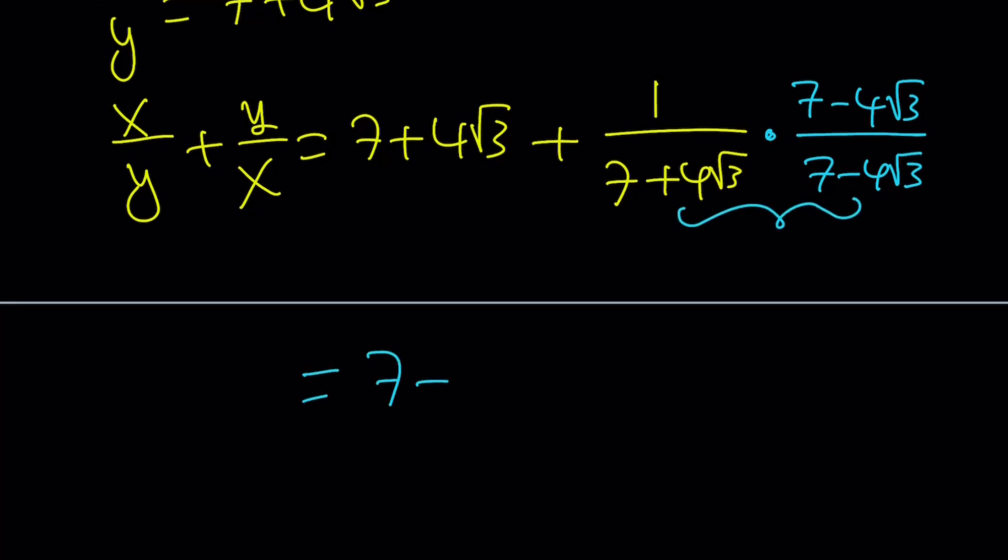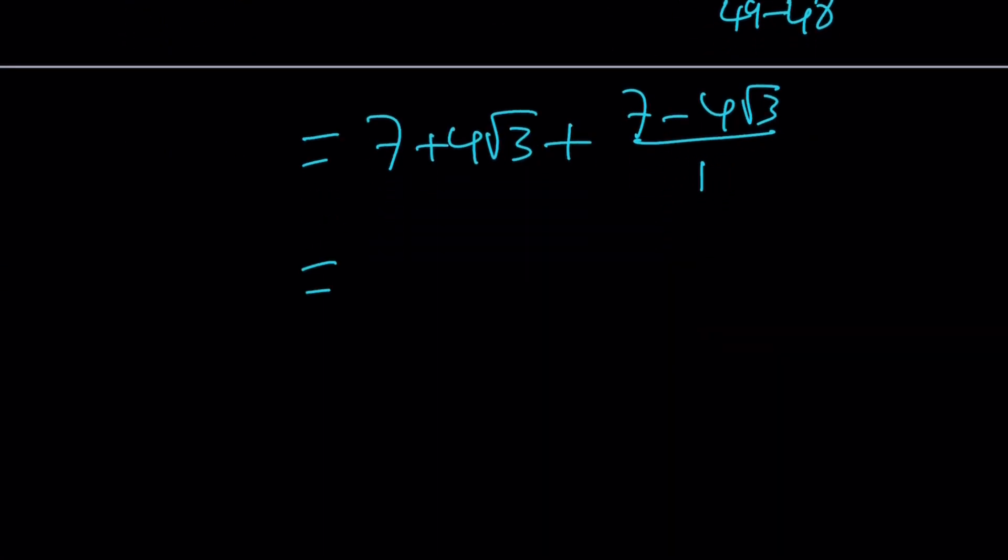So from here, we get 7 plus 4 root 3 plus, now 1 times that is going to be the same thing. And at the bottom, you're going to get a difference of two squares, which is 49 minus 48. Wow. That's equal to 1, isn't it? Yes. So that gives us 1, which is nice. And now from here, these two cancel out. We end up with 14. Wow. That's interesting, right?